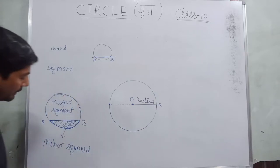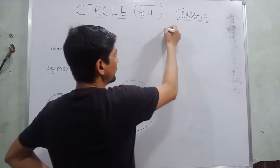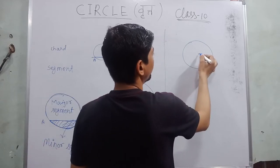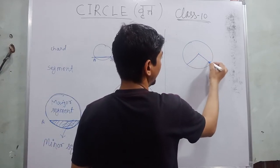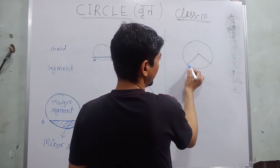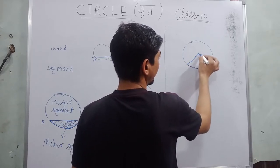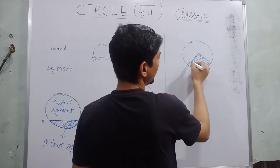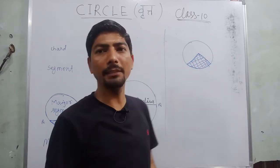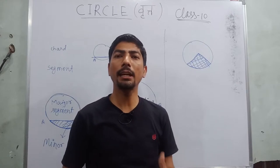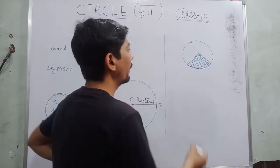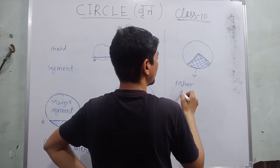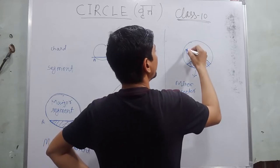Now we are talking about sector. Let us suppose it is a circle and this is the center point. When we draw two radii like this, there is an arc and these are the radii. The region between two radii and their corresponding arc is called a sector. The smaller one is called the minor sector and the larger one is called the major sector.